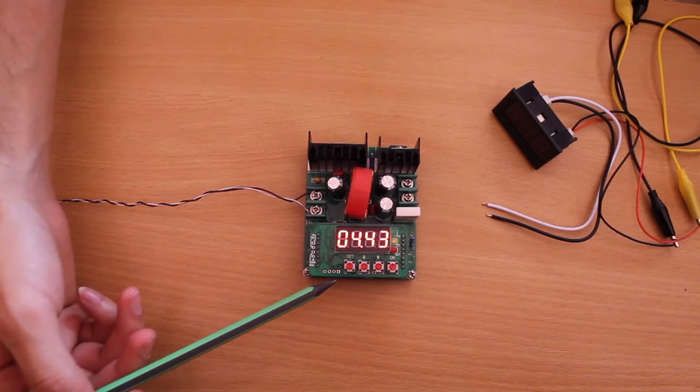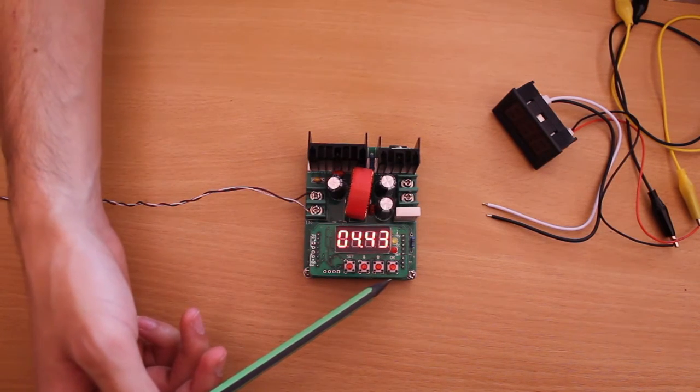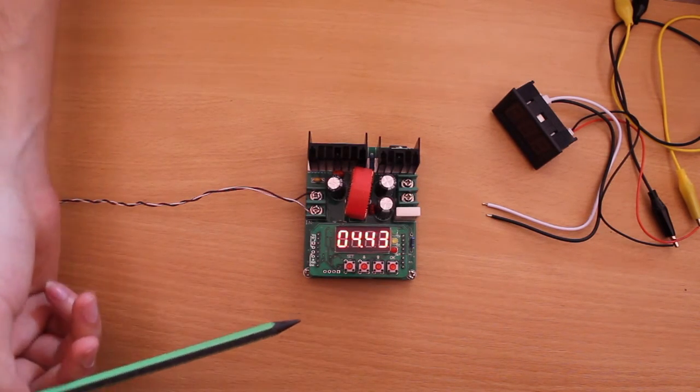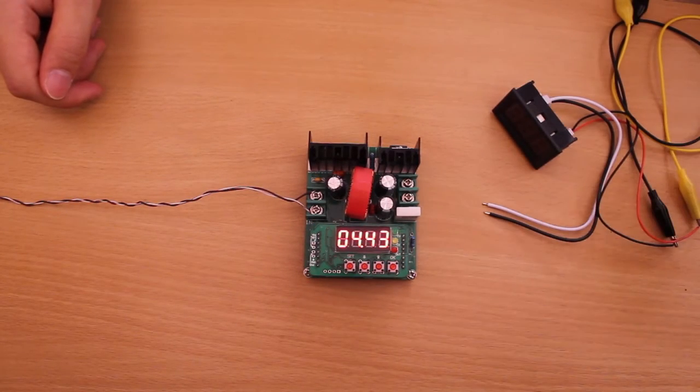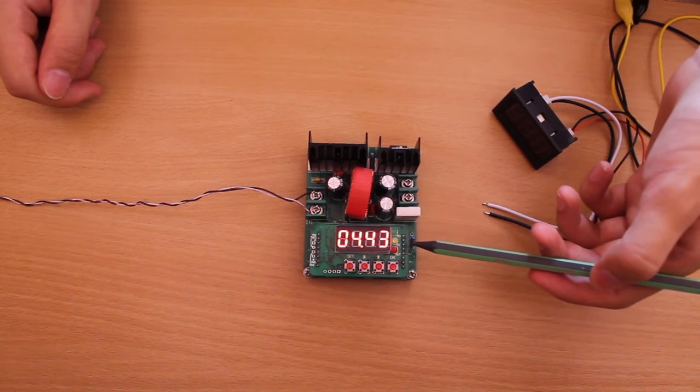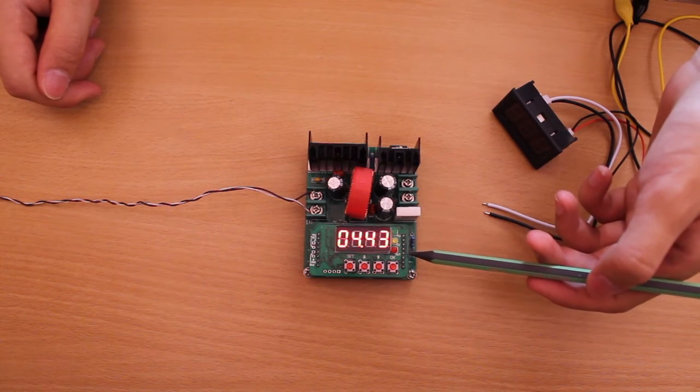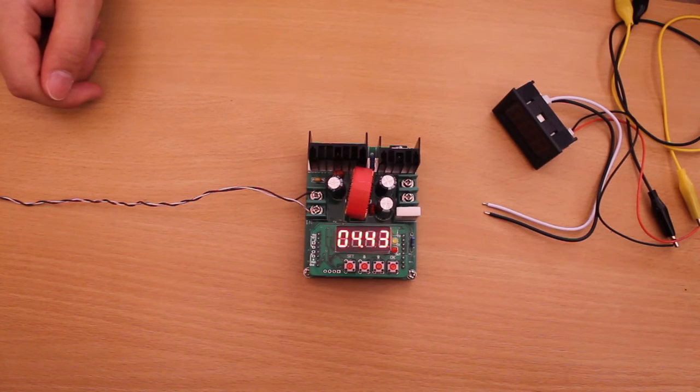The buttons are SET, DOWN, UP and OK. The green LED shows that the device is in constant voltage mode. The yellow one is for constant current and the red one shows that the device is outputting power.